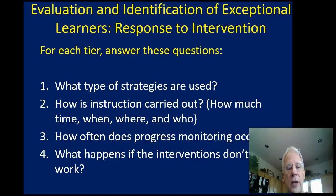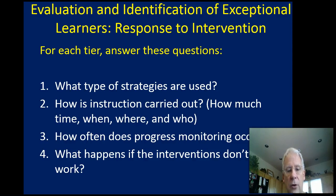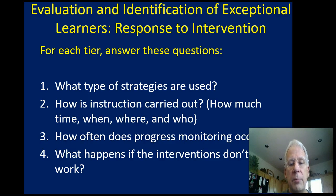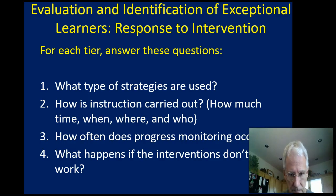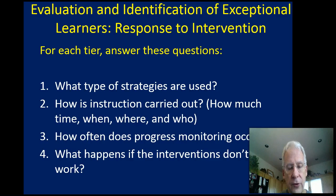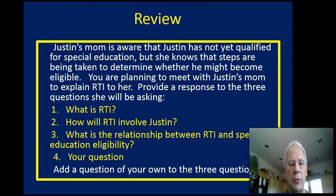One way to check your understanding of the tiers is, for each tier — Tier 1, Tier 2, Tier 3 — consider: what types of strategies are used, how is instruction carried out, how much time, when, where, and who, how often does progress monitoring occur, and what happens if the interventions don't work. Based on the information just covered, you ought to be able to answer those questions. I would suggest you get out a piece of paper, move through each tier, and create a concept map or chart to assess your understanding of the RTI process.